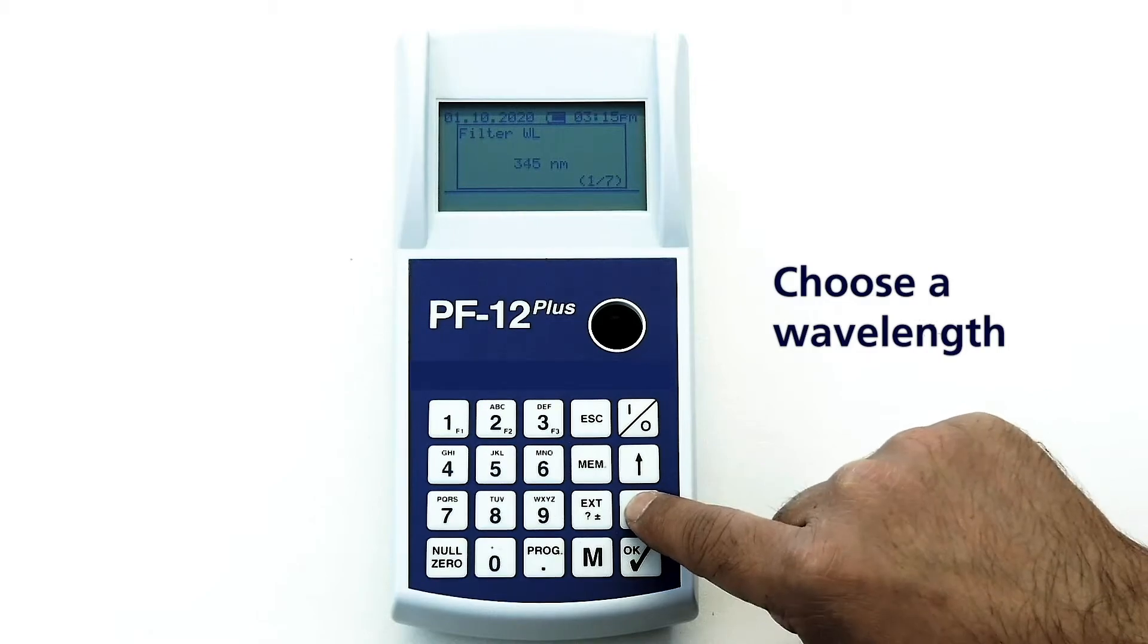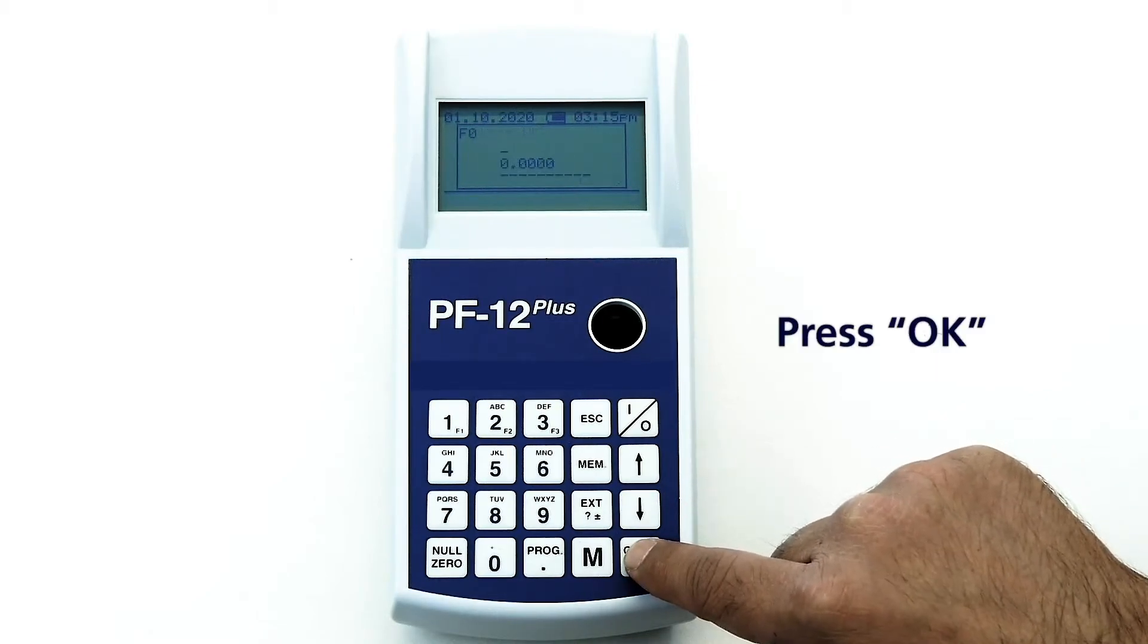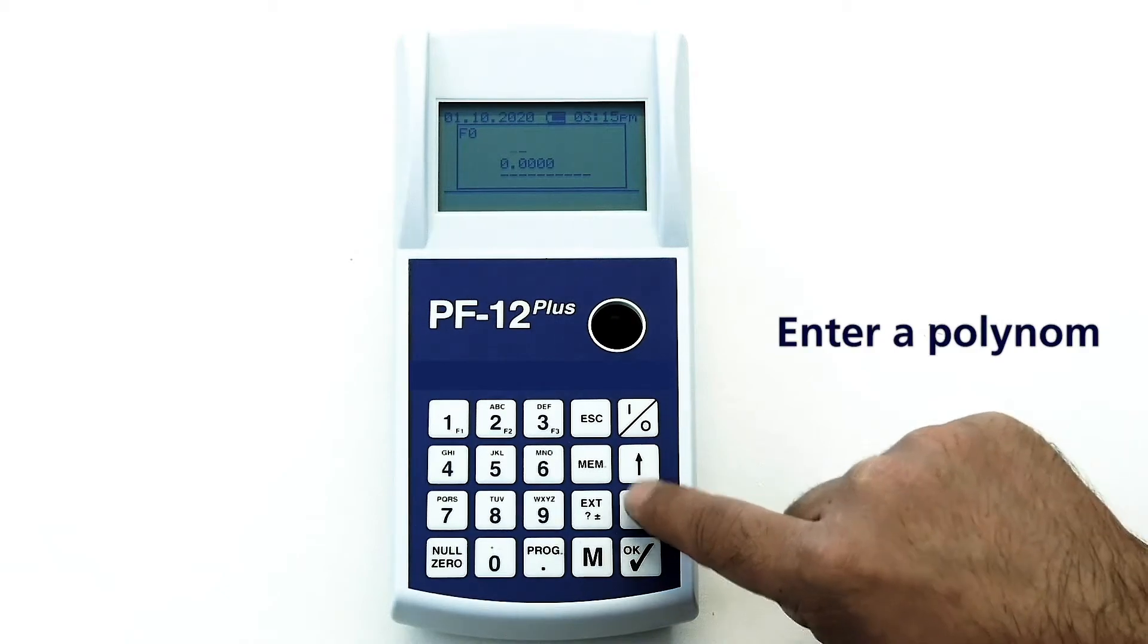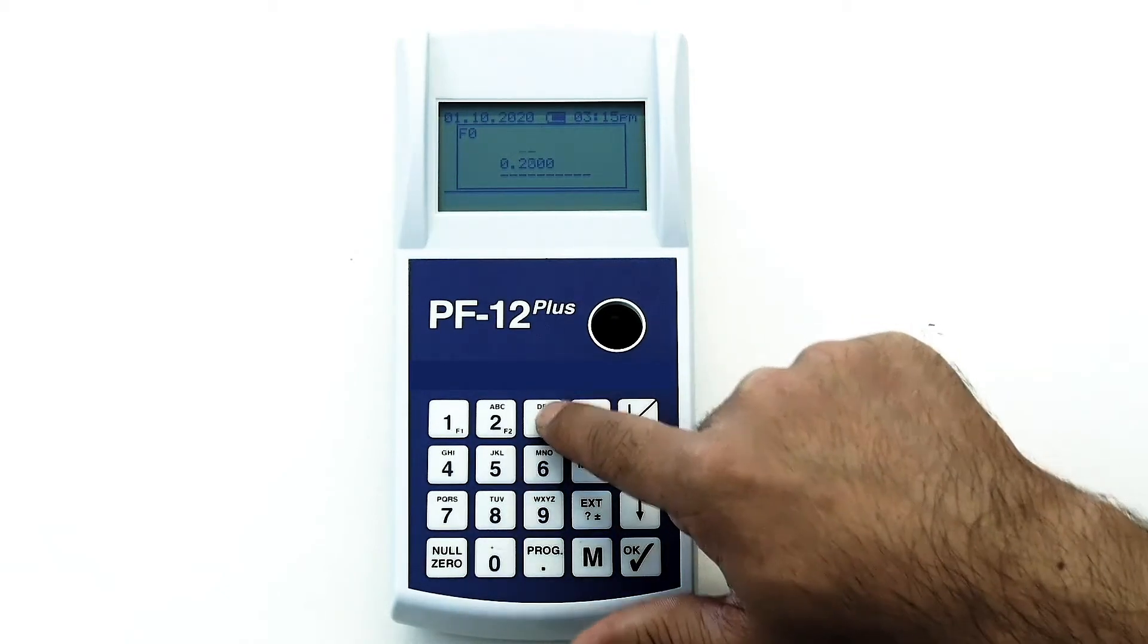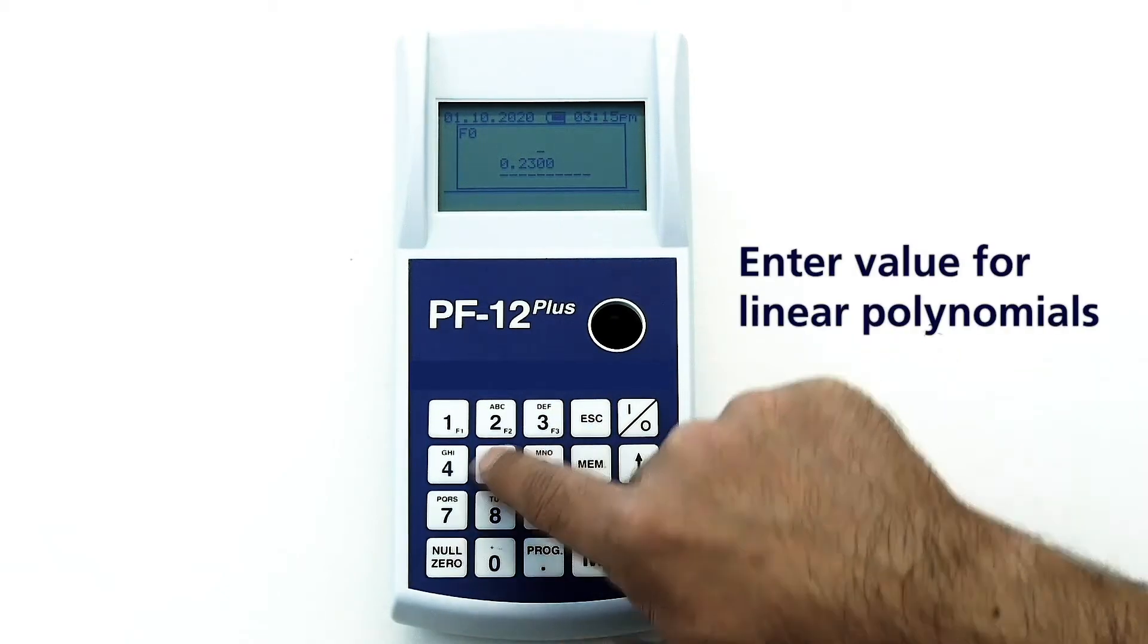Choose a wavelength. Press OK. Enter a polynomial. For linear polynomials you need to enter value for f0 and f1.